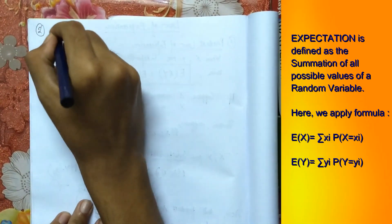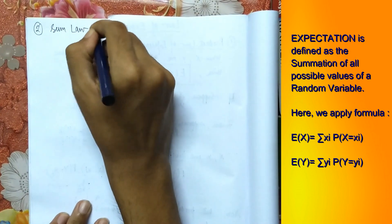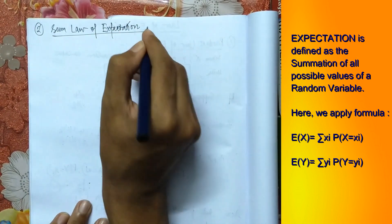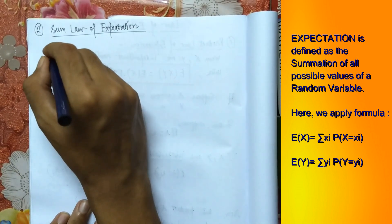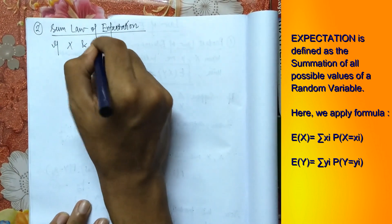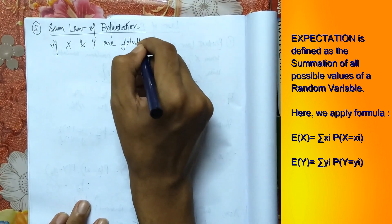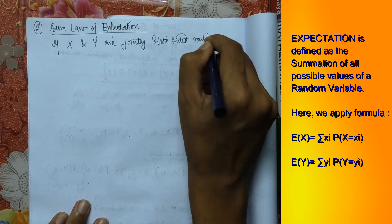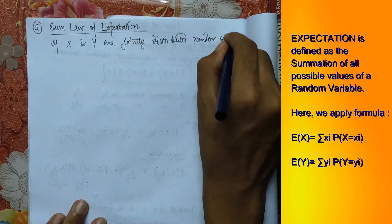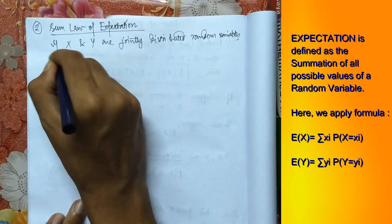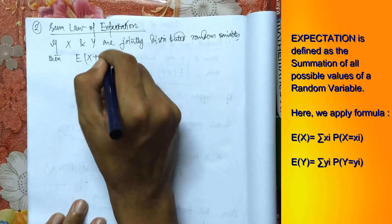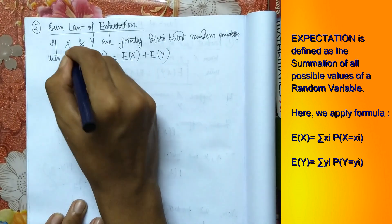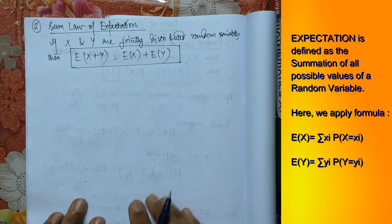The next law is known as the Sum Law of Expectation. The Sum Law states that if X and Y are jointly distributed random variables, then E[X + Y] equals E[X] plus E[Y]. We have to prove this expression.